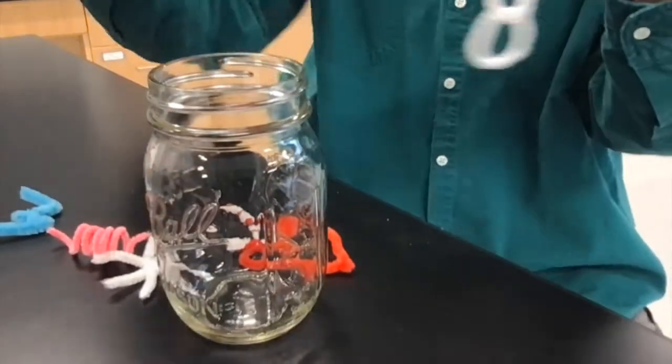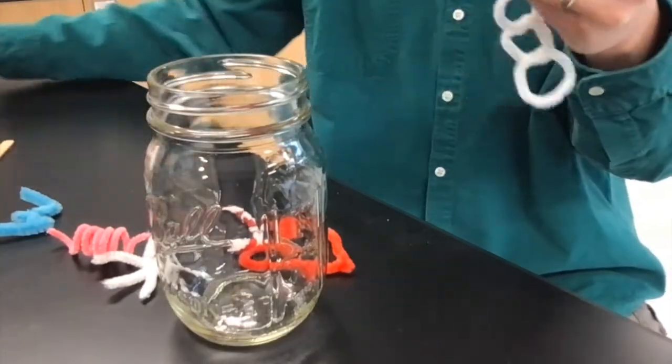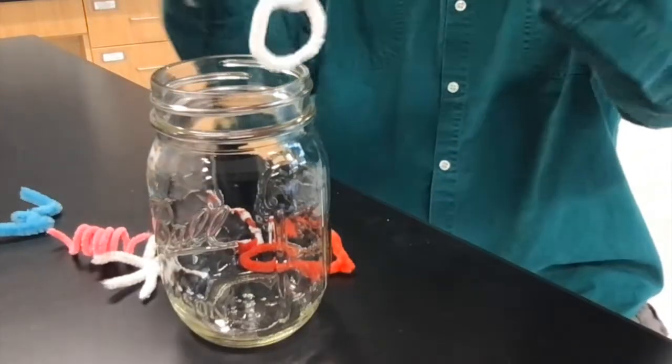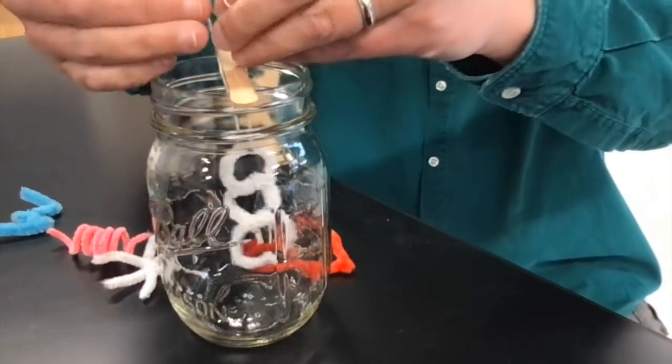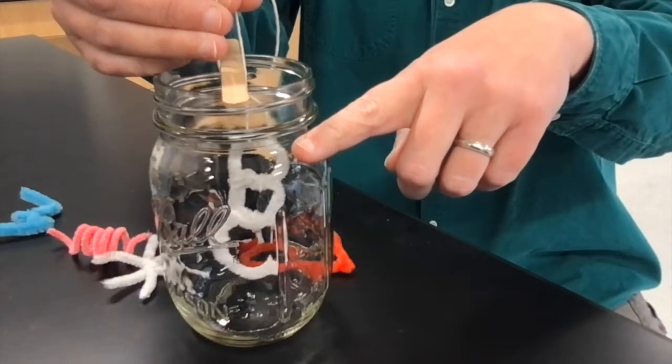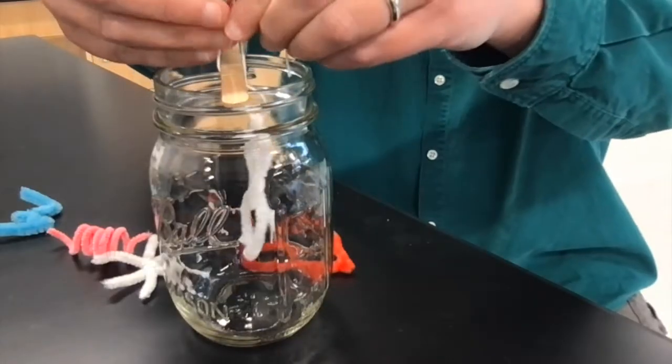I'm going to use a craft stick to hang my ornament into my jar. You don't have to. You could use a spoon, a stir stick, or whatever you've got around the house. And I'm going to measure the length of my string so that it's below the lip of the jar but not touching the bottom, not touching the sides.